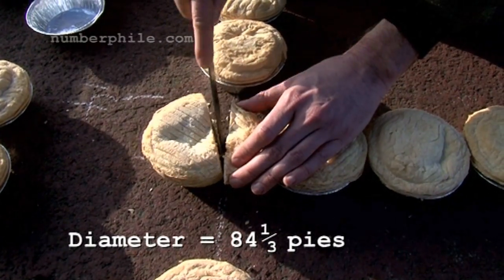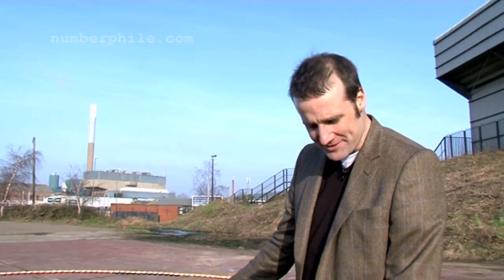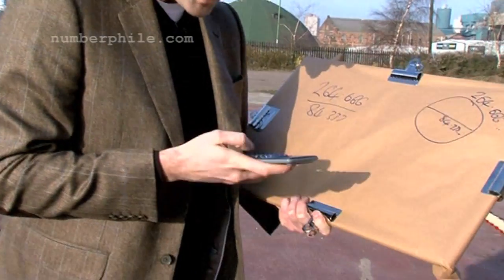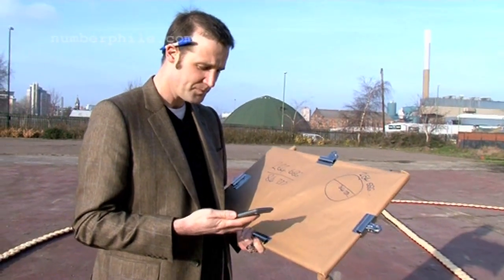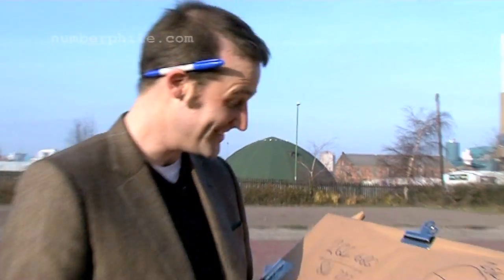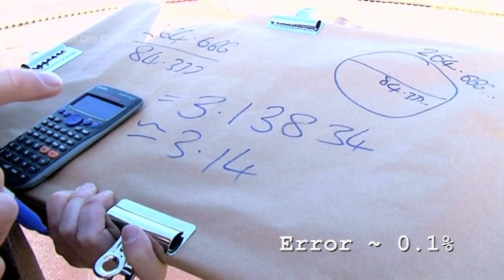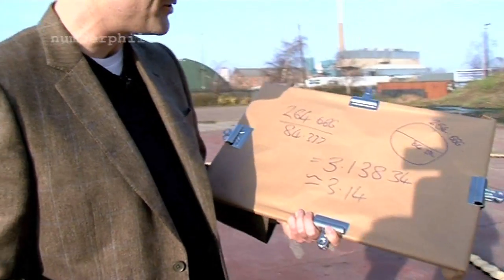So that's 84 and one-third pies for the diameter, and 264 and two-thirds pies around the circumference. We know the diameter is 84 and a third pies. To get pi, we just divide the circumference by the diameter. And if we actually work out what that is, it equals 3.13834, which is approximately 3.14. So using pies, we've got pi to be 3.14. I'm a very happy man right now. Anything between 3.1 and 3.2 I would have been happy with, but to get 3.14, I'm downright ecstatic.